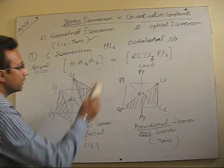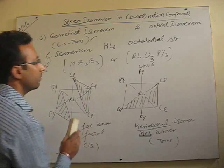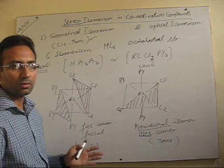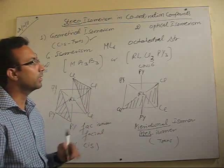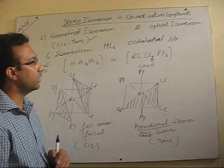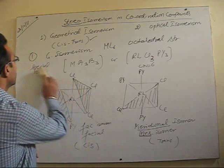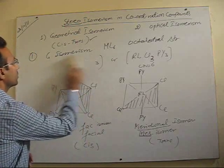By this example we have covered all the different cases of square planar as well as octahedral complexes in geometrical isomerism.